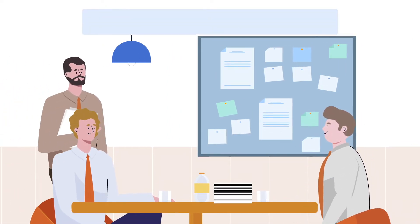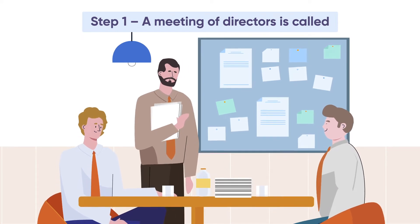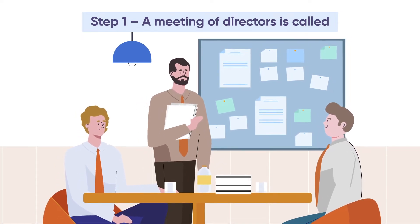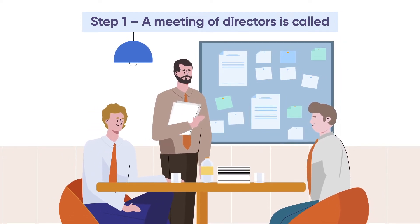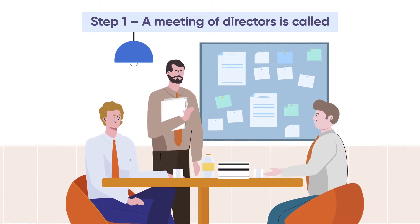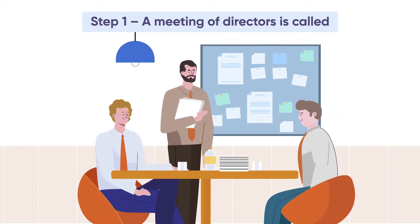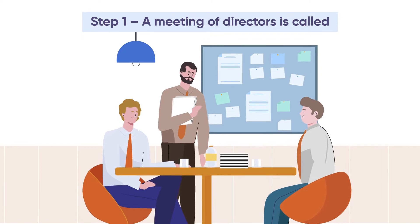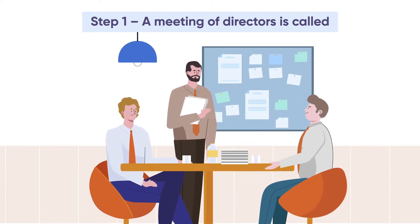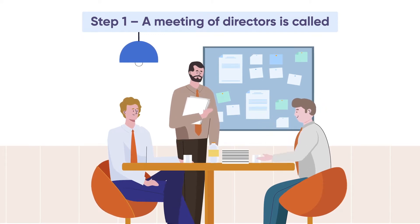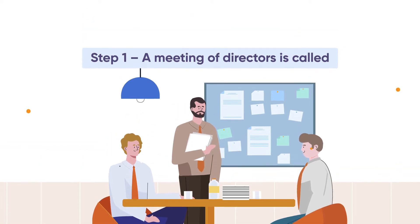Step 1: A meeting of directors is called. A meeting of directors needs to be called and held, at which a resolution is passed that a declaration of solvency be signed and that a general meeting of members be called to consider a resolution that the company be wound up. A declaration of solvency is a declaration made by the directors confirming that, in the directors' opinion, the company will be able to pay its debts in full within a period not exceeding 12 months after the commencement of the winding up.